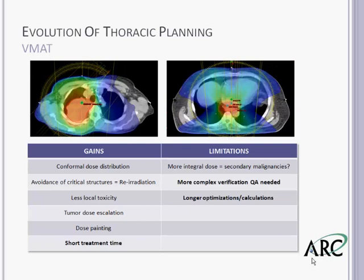Over the past decade, arc therapies have gained widespread clinical interest, addressing some of the limitations of fixed field treatment. In 2007, VMAT was introduced, allowing for gantry rotation and dose rate variation while the beam is on. Currently there are three commercially available VMAT systems: Elekta VMAT, Philips SmartArc, and Varian's RapidArc. For the remainder of this presentation, when we talk about VMAT, we will be referring specifically to RapidArc.